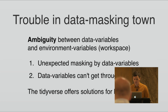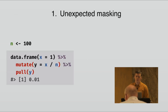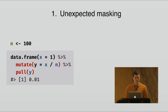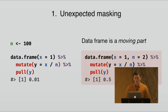We are going to see solutions that we offer in the Tidyverse to solve these issues. First, about unexpected masking: let's say that you have created an object in your workspace that contains a number, and you have a data frame with an X column and you want to create a new column that divides column X by the number inside N. The problem is that the data frame is really a moving part.